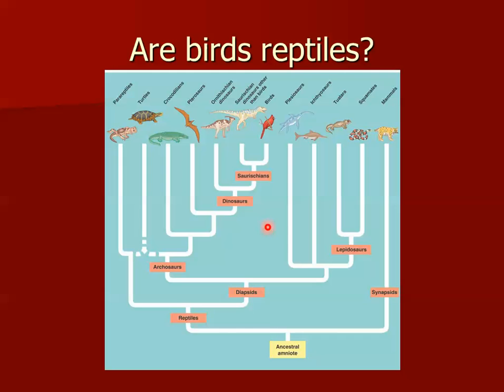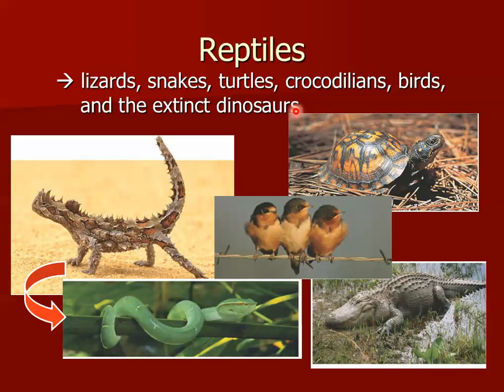If we take reptiles as a clade, or even if you look at diapsids and their descendants as a clade — snakes, extinct dinosaurs, and crocodiles — if we call these all reptiles, then we have to call birds reptiles. So reptiles today include lizards, snakes, turtles, crocodilians, birds, and the extinct dinosaurs. These are all classified as reptiles.